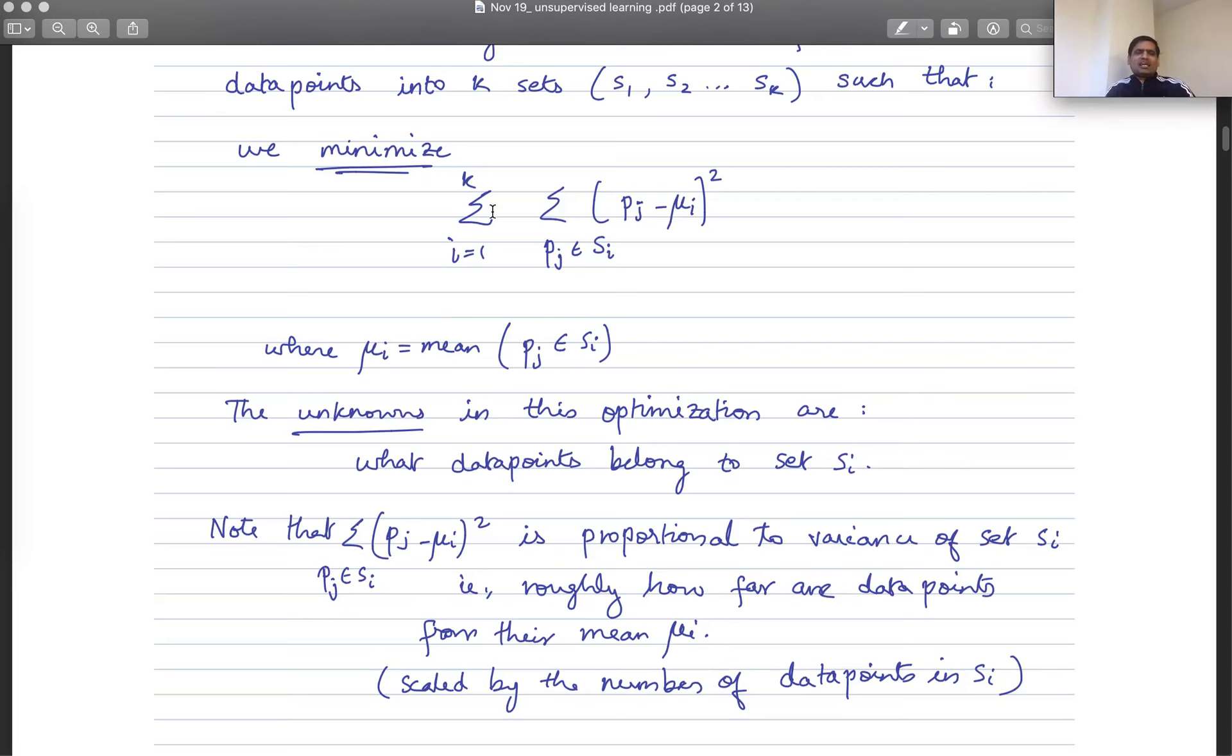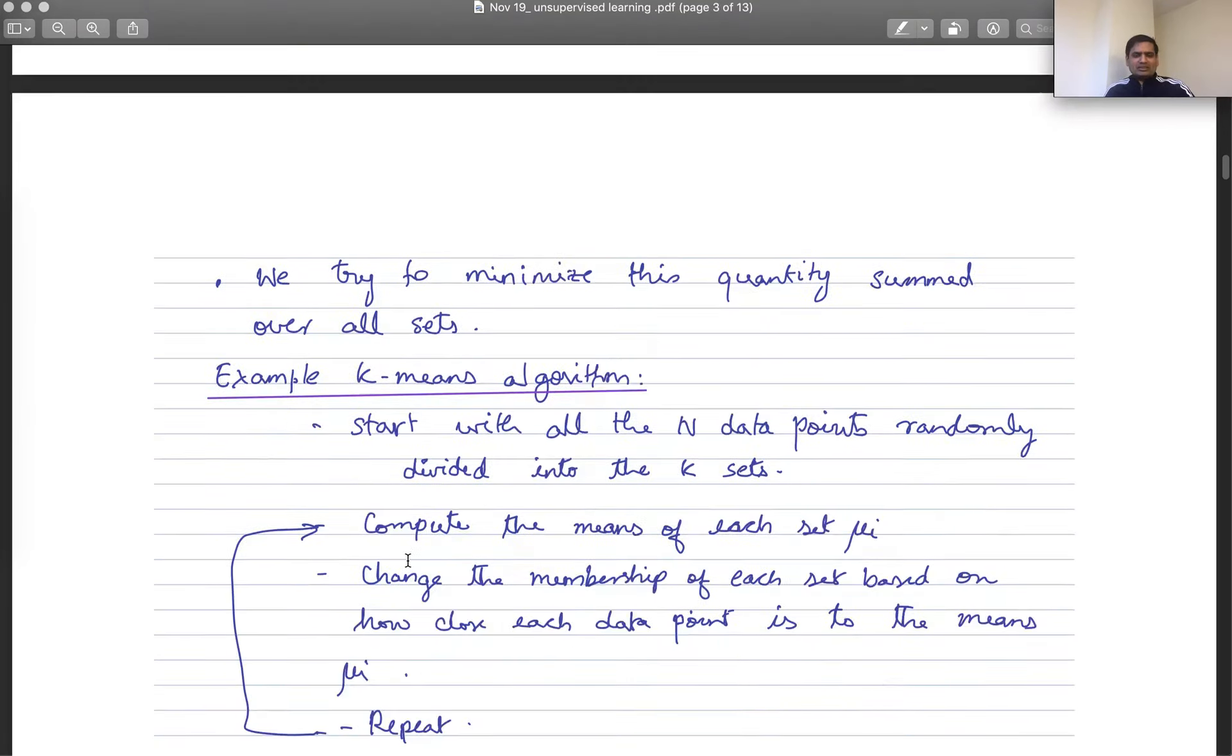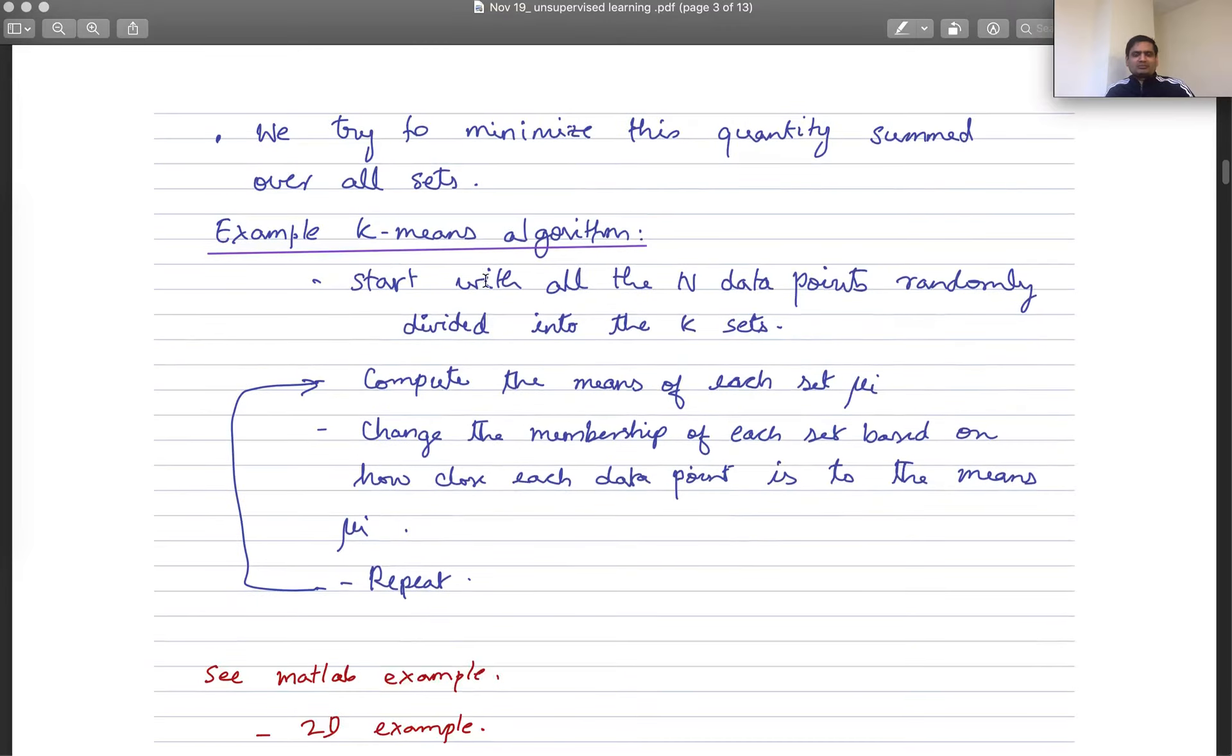So how would you potentially assign different data points to different clusters? What might an algorithm for that look like? An algorithm for that might look like the following. You have, let's say, 100 data points, for instance. You just randomly, and let's say you want five clusters. Let's say you're looking for dividing the 100 data points into five clusters. You just randomly take all the data points and assign them to each of five different clusters. Let's say 20 points in cluster one, 20 points in cluster two, 20 points in cluster three, four, and five. Randomly assigned, but no initial criteria.